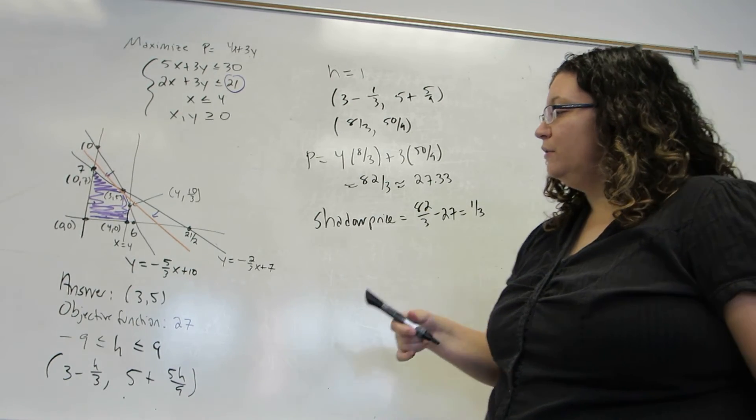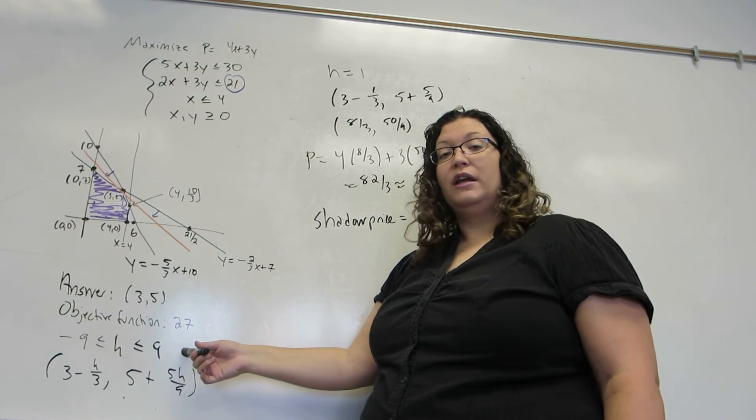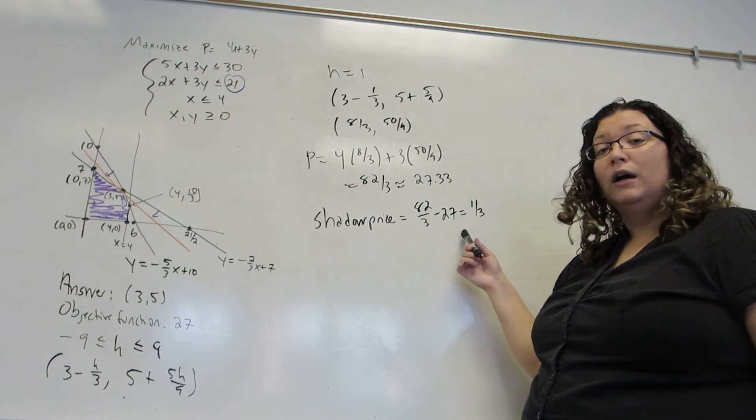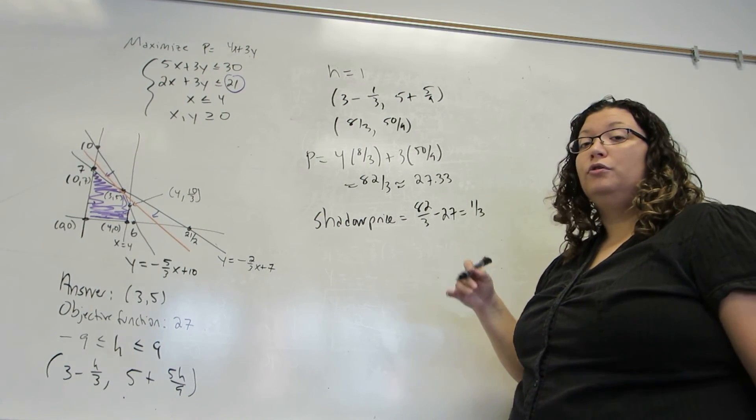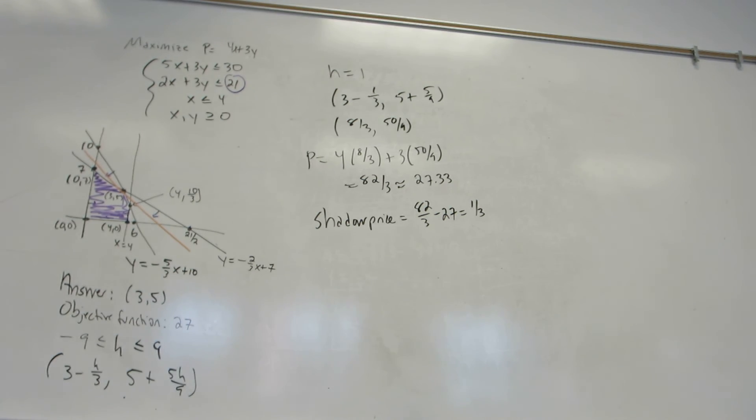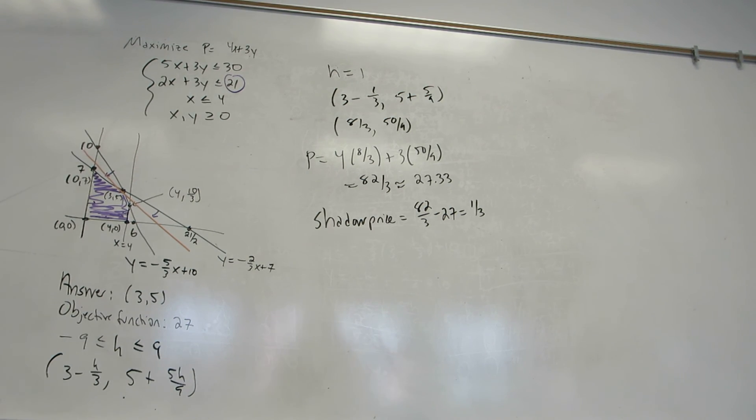I can also go down. If I decrease it by 3, which is in the allowed range of H, my profit will go down by 3 times a third, or it will go down a dollar. So, once you have the shadow price, you can tell what will happen to profit for any value of H in the allowed range.